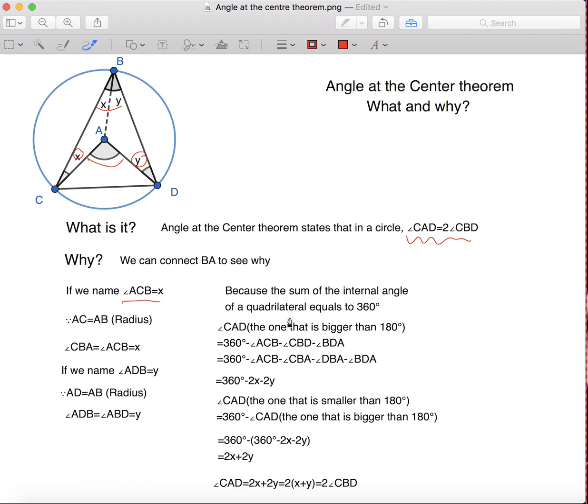Because the sum of the internal angle of the quadrilateral equals to 360, no matter if it's convex or not. So, in the quadrilateral C, B, D, A.